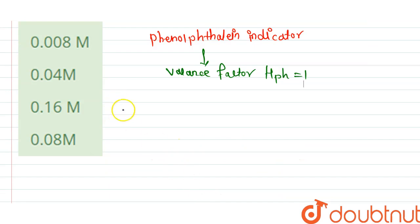So we can calculate equivalent of HCl is equal to equivalent of Na2CO3.